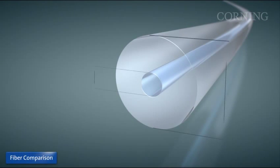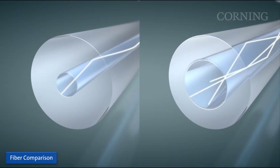The core, the center part of the fiber, is the area through which the light signals are transmitted. The cladding layer completely surrounds the core, keeping the light from escaping.